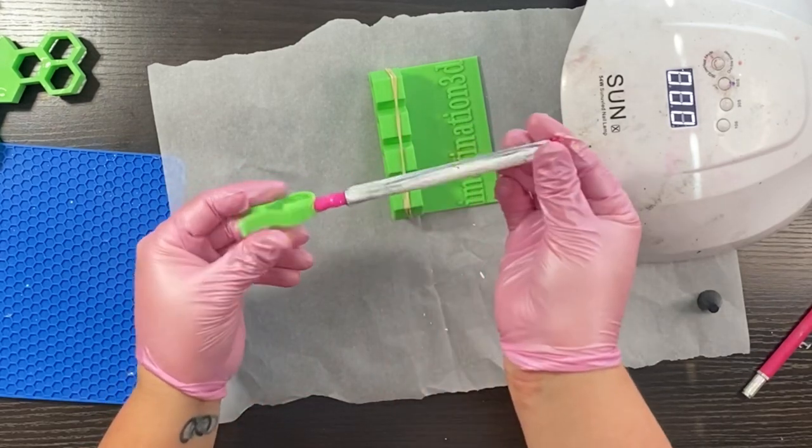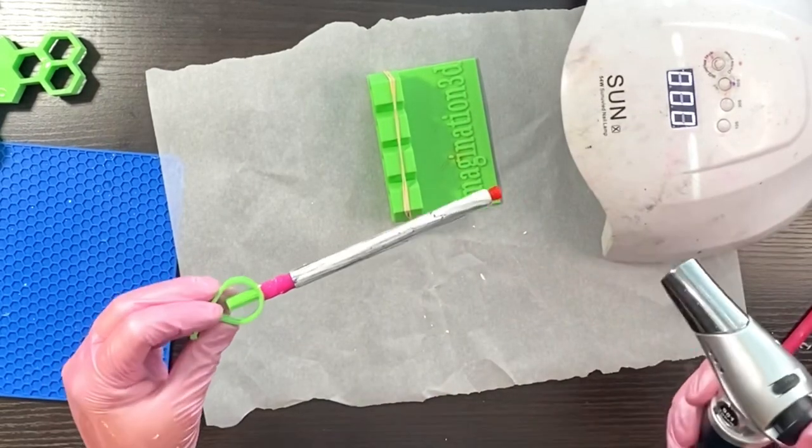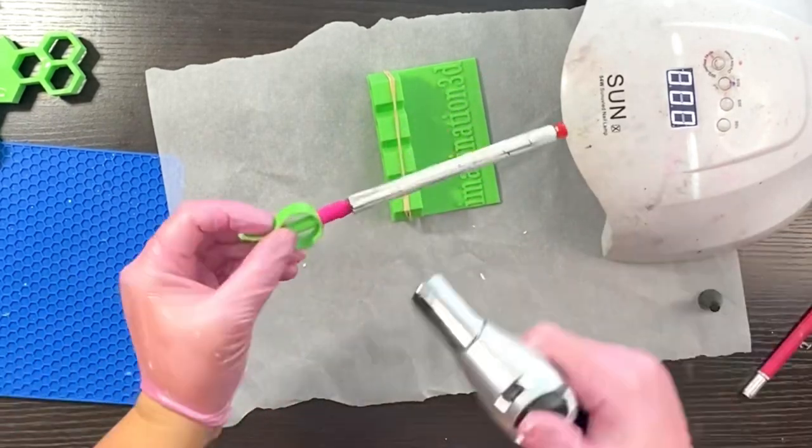So once I have my pen completely coated, I am then going to use a baby wipe to wipe my hands off and torch it to pop any micro bubbles that might be in the UV resin.